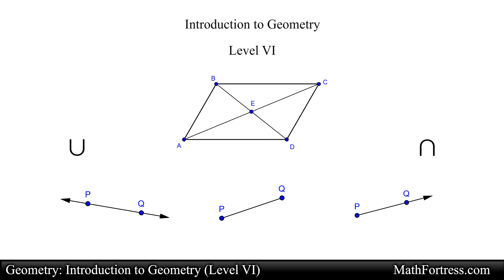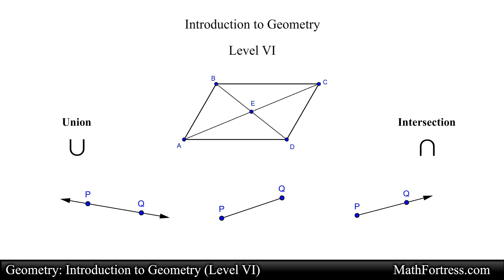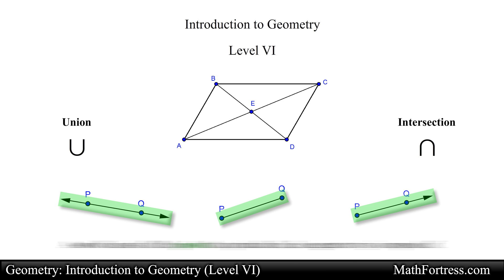Recall that the symbol for denoting the union of two sets is this U-shaped symbol — it is essentially a U for union. The symbol for the intersection of two sets is an upside-down U. It is important to understand that when we are dealing with lines, line segments, and rays, a set will consist of all the points that a particular line, line segment, or ray is composed of.